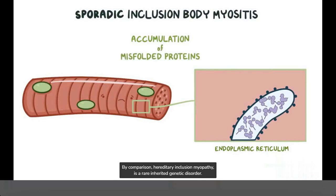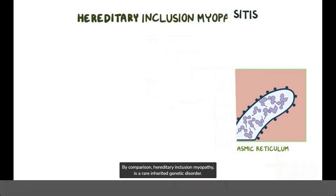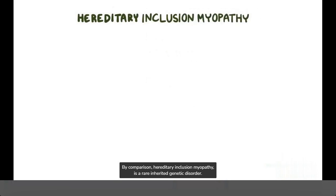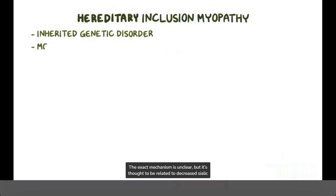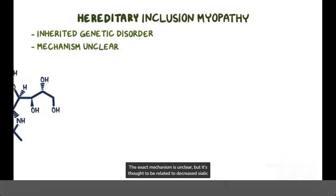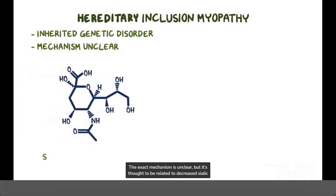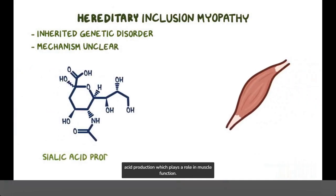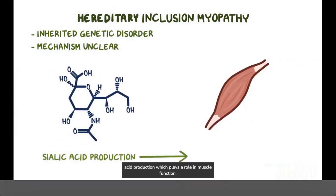By comparison, hereditary inclusion body myopathy is a rare inherited genetic disorder. The exact mechanism is still unclear, but it's thought to be related to decreased sialic acid production, which plays a role in muscle function.